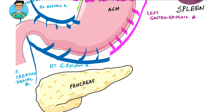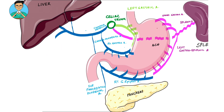It is called the right gastroepiploic artery because it is present relatively on the right side, it moves along the greater curvature of the stomach (hence gastro), and it moves very close to the transverse colon, which contains epiploic appendages.